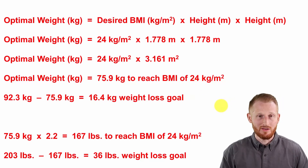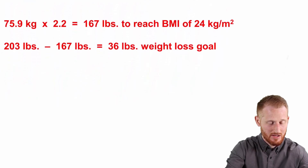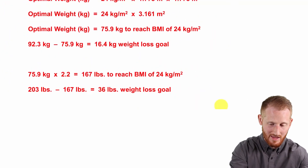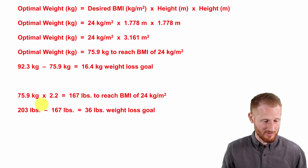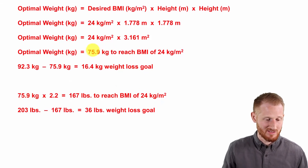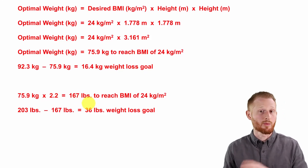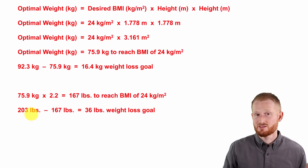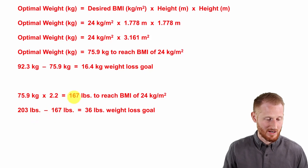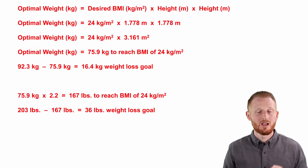This is all in the metric system, but let's also express these values in imperial units common in the United States. Converting 75.9 kilograms back to pounds: 75.9 times 2.2 gives us 167 pounds as his ideal body weight for a BMI of 24. Subtracting from his current weight of 203 pounds, he needs to lose 36 pounds to reach his goal weight.